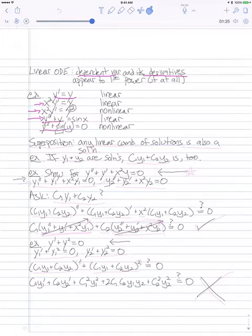And then finally, y double prime plus sin y equals 0. That's a nonlinear equation because sin is a nonlinear function of the dependent variable.